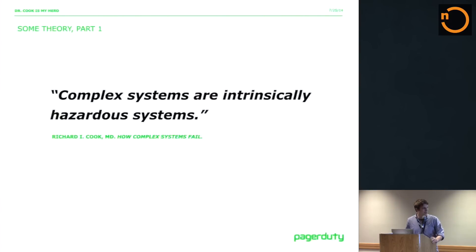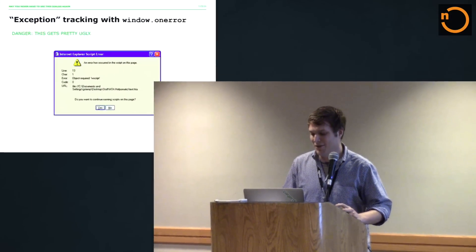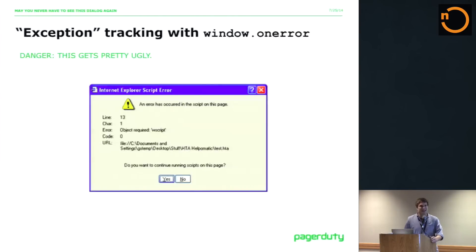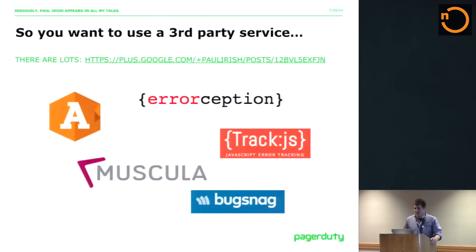This is the first part of three parts of theory behind complex systems failure from a fairly well-known paper by Dr. Richard Cook, who specializes in medical system failure, which is also another complex system. It recently took off in 2012 when he gave a talk at Velocity and it kind of gained somewhat of a cult status. I really encourage you to read the paper — it's only three pages long and it's mostly bullet points. We know these complex systems are very hazardous and that bad things will happen. In the front-end world, I think traditionally that means a JavaScript exception — the dreaded Internet Explorer 6 exception dialogue.